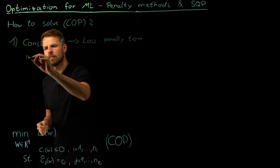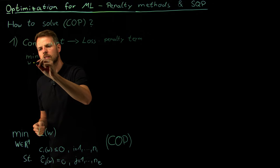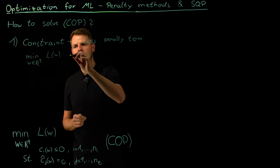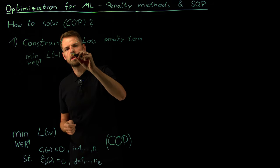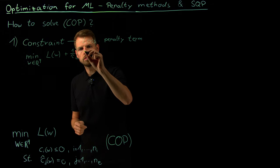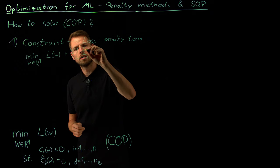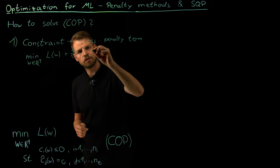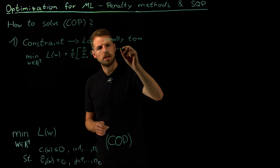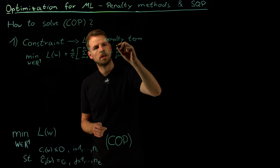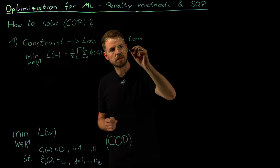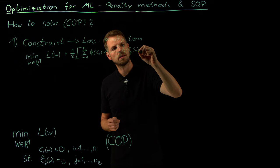And so what we get is actually something that should look somewhat familiar. So we minimize again over our parameters w the loss function L of w. And then we add as a penalty term, we have the scaling parameter tau. And then in this bracket we add penalty functions. So for the inequality constraints these can be phi functions of the inequalities and for the equality constraints we have basically the same structure. So J from 1 to N equality, phi hat can be some other type of function of the equality constraints.